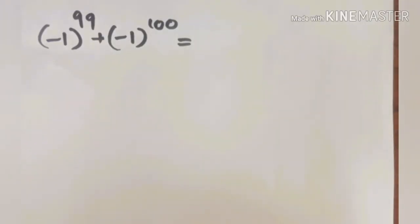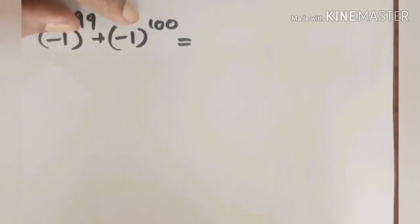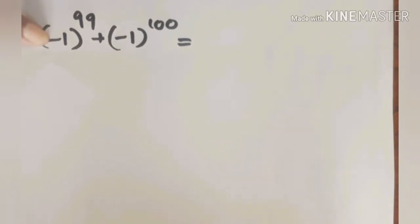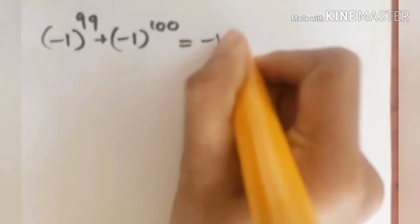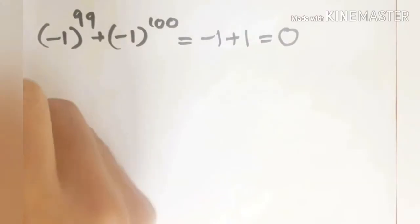Next question: minus 1 raise to 99 plus minus 1 raise to 100. Minus 1 raised to an odd power gives minus 1. Minus 1 raised to an even power gives positive 1. So minus 1 plus 1 equals 0. The answer is 0.